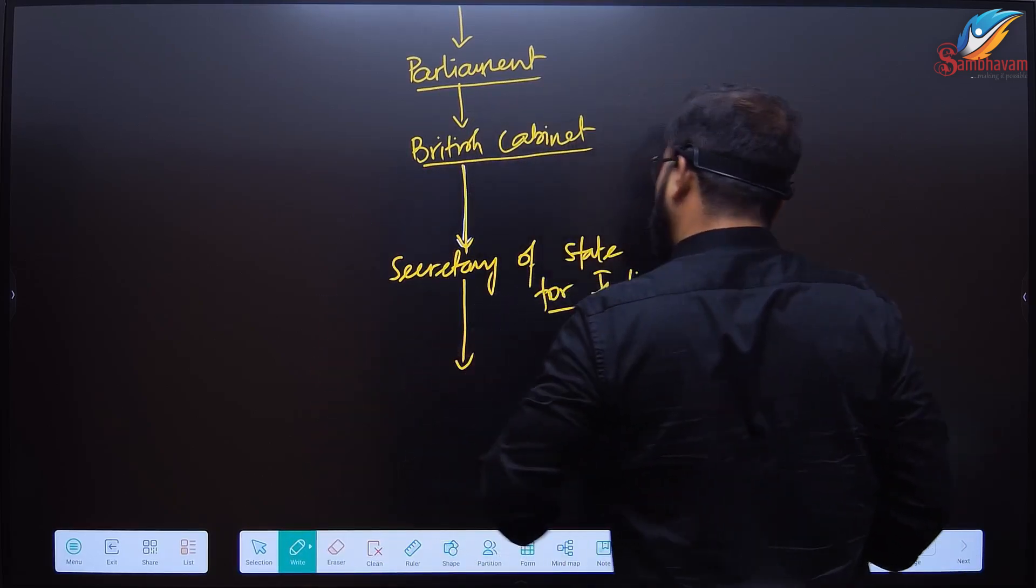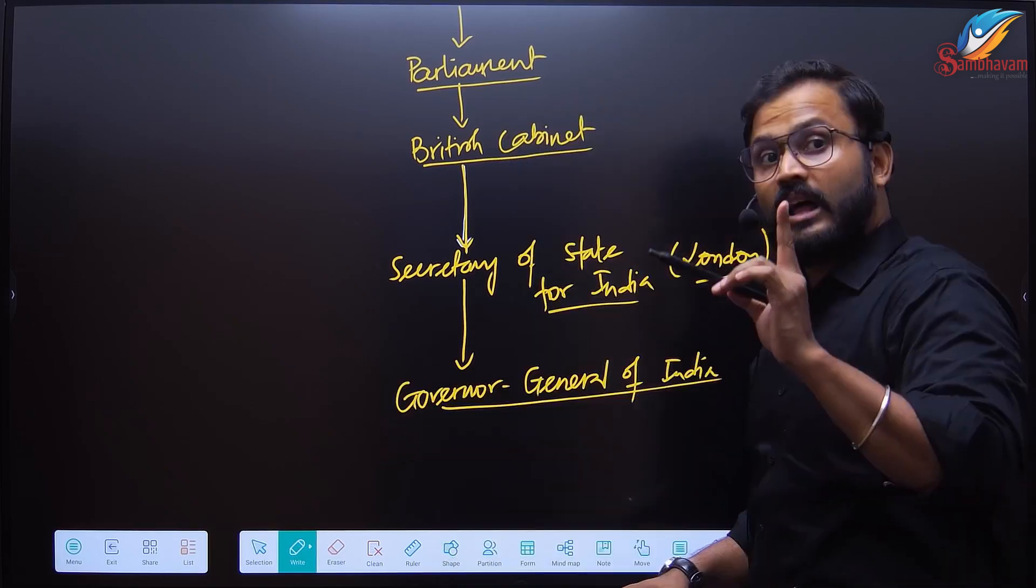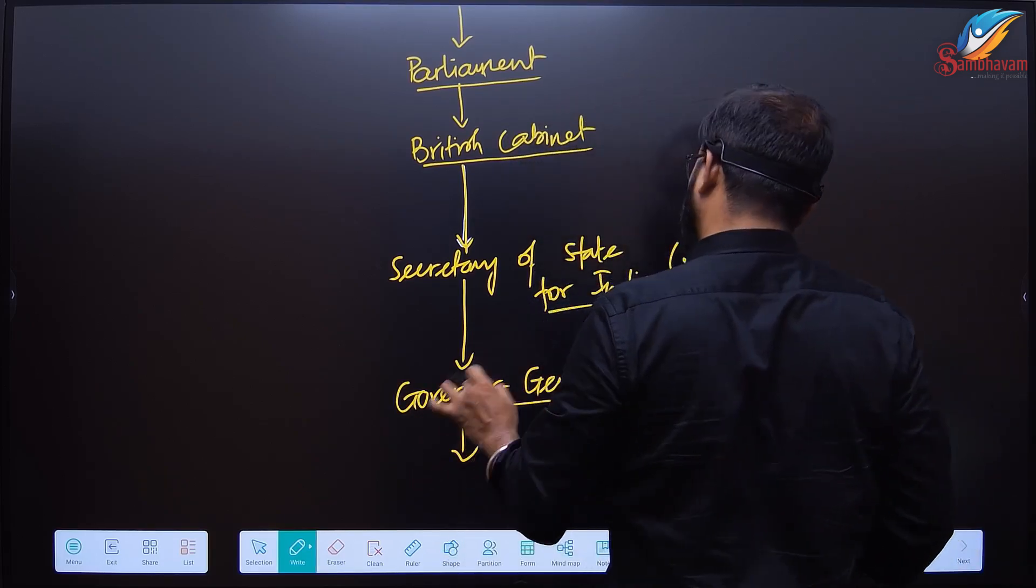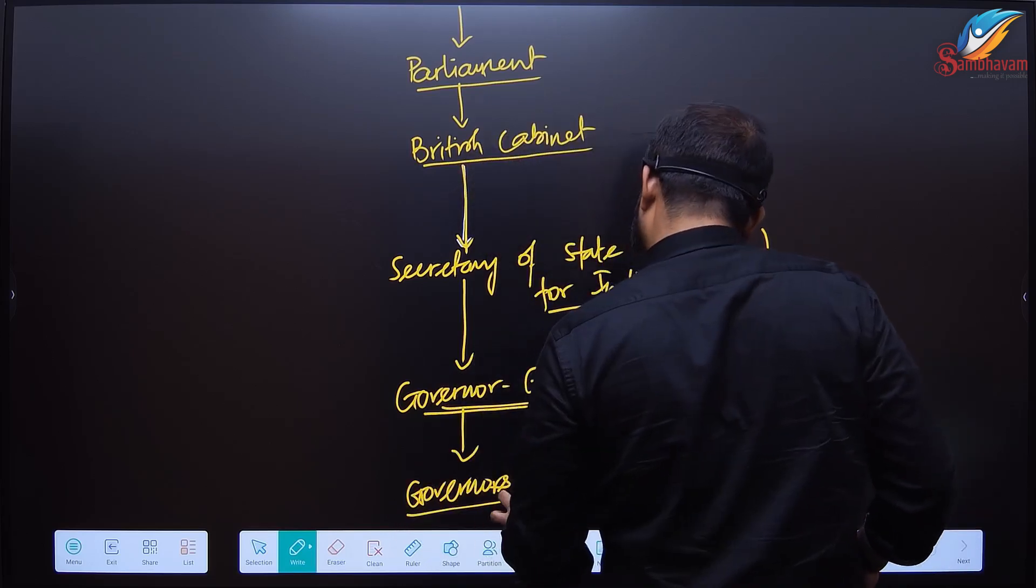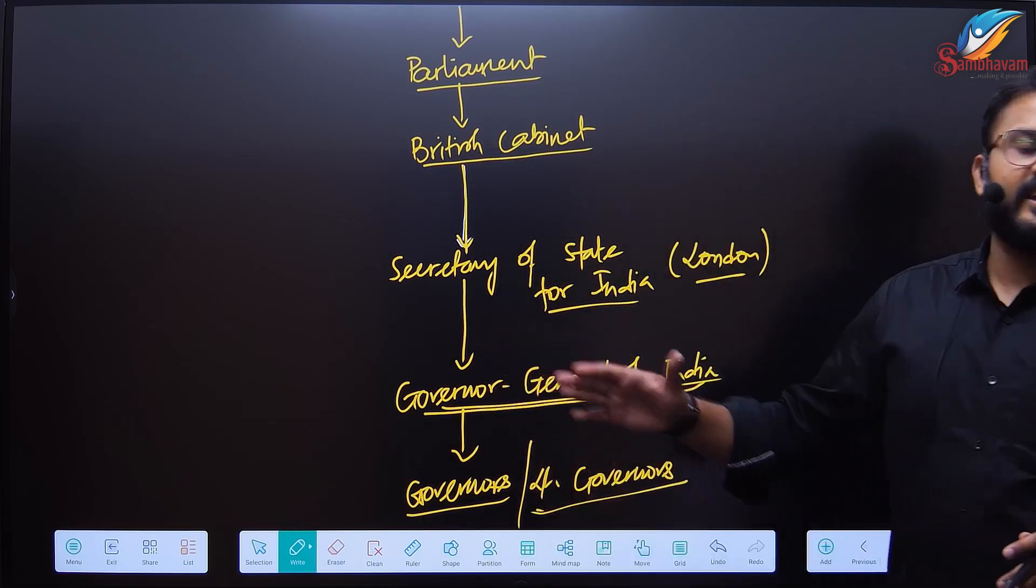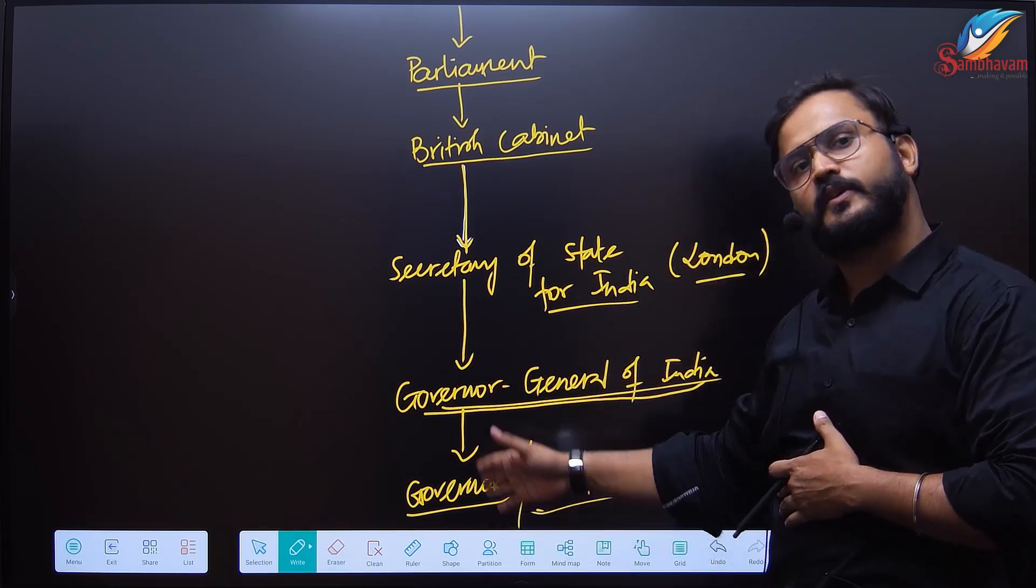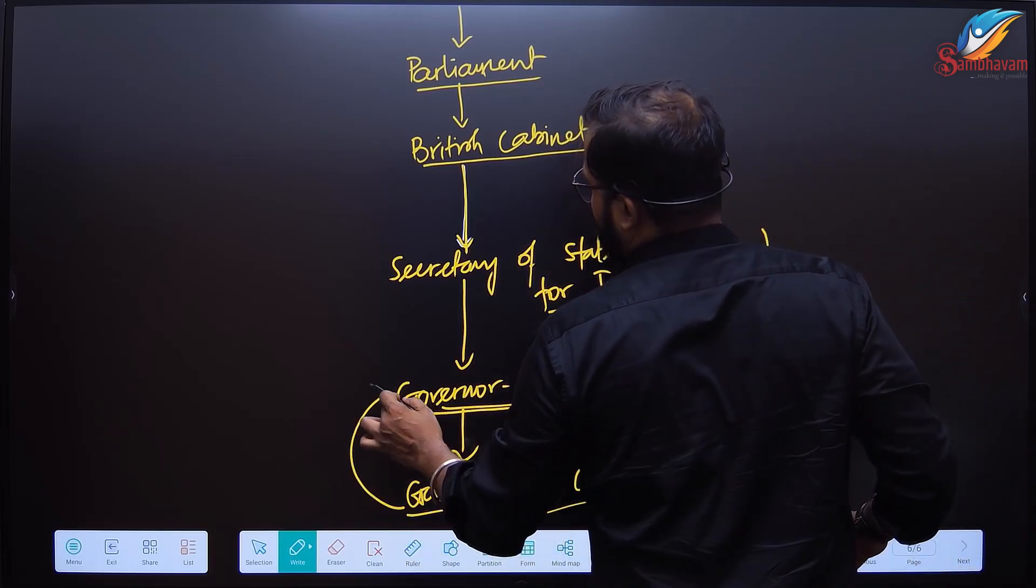This minister is a member of the British Cabinet. He will be enforcing the rights, exercising his rights through the Governor General of India. The Governor General of India will be exercising his responsibility through the governors or lieutenant governors, as the case may be. Now you understand the chain of hierarchy.